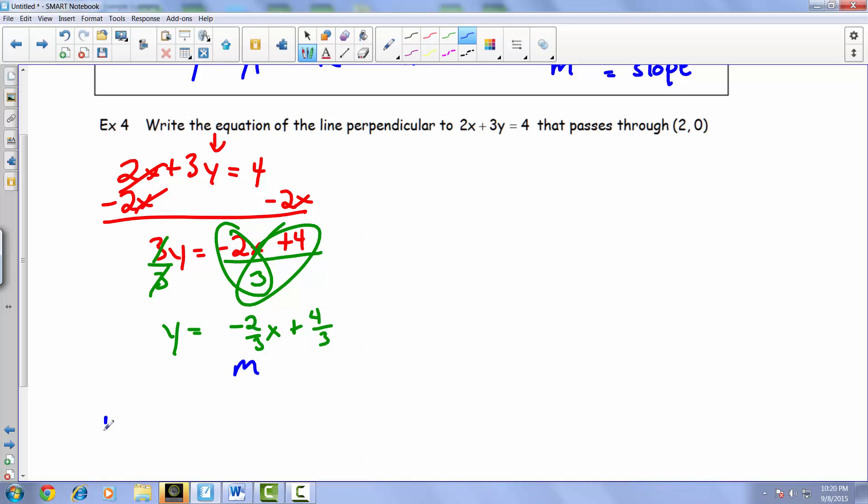We have m equals negative two-thirds. When we're talking about a line being perpendicular, we know from our previous notes from our 2.2, 2.3 set of notes that we have to find the opposite reciprocal, and that would give us the perpendicular slope.